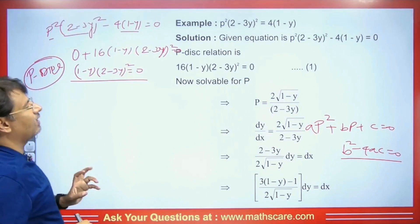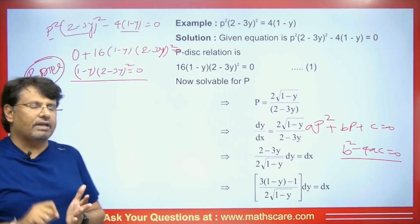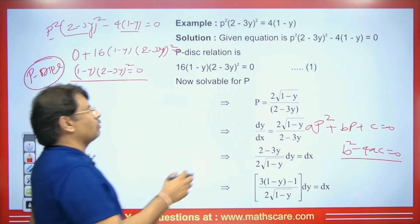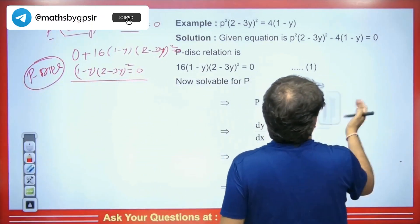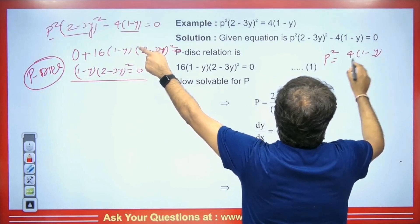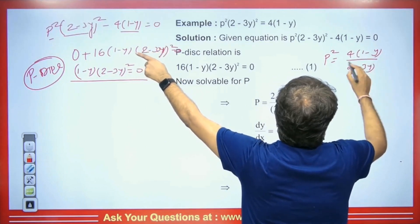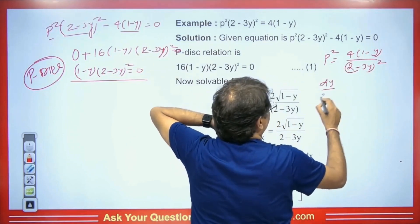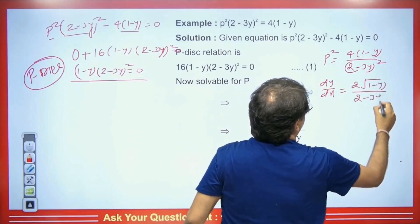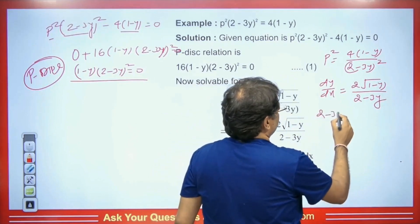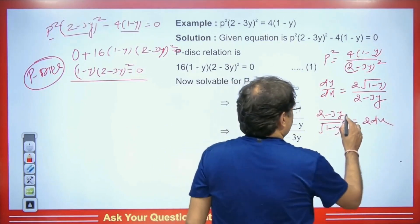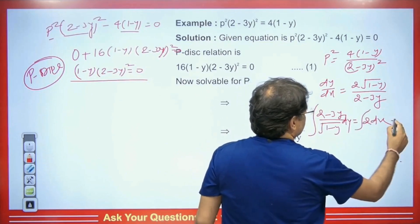Now we find the C discriminant by solving the equation. This is solvable for p. We get p² = 4(1−y) / (2−3y)², so p = dy/dx = 2√(1−y) / (2−3y). Separating variables: (2−3y) / √(1−y) dy = 2 dx. We integrate both sides. Adding and subtracting 1 in the numerator helps: 3√(1−y) · (1−y) and −1/√(1−y) terms appear, integrating to (1−y)^(3/2) and (1−y)^(1/2) terms.